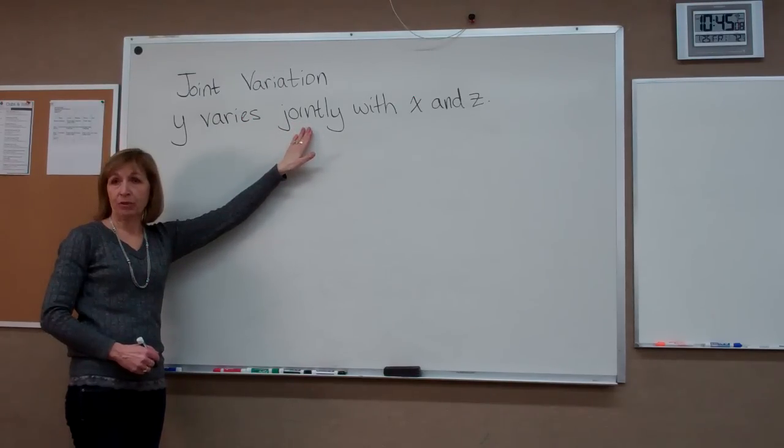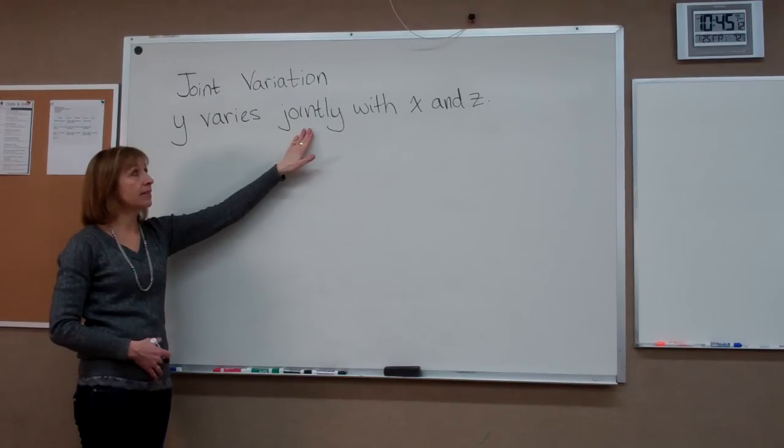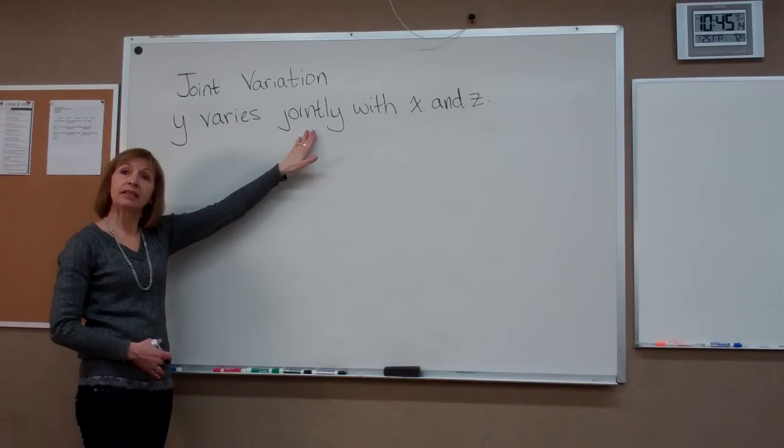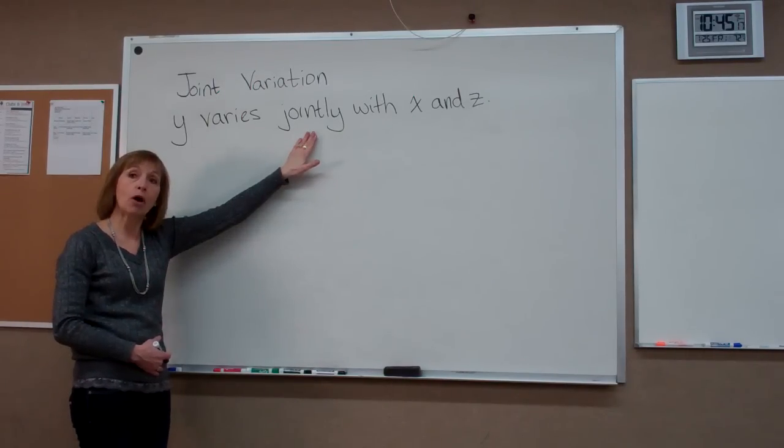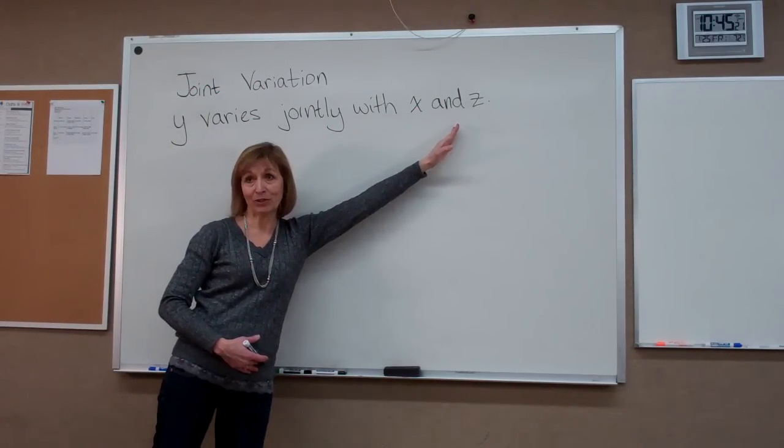But jointly is going to be with more than one variable in the process of the variation, and jointly implies that our constant of variation gets multiplied to the product of these variables that follow.